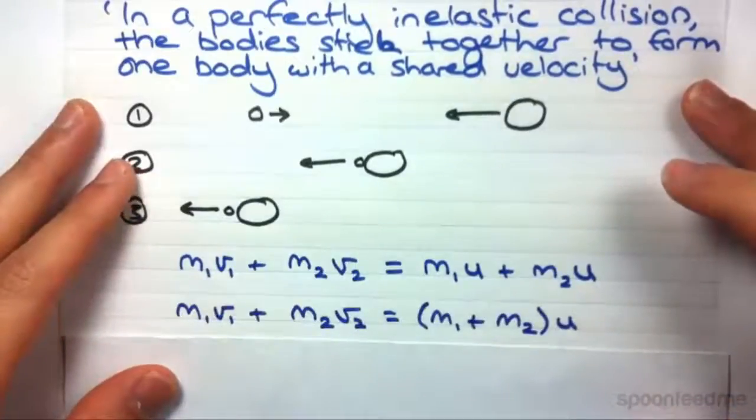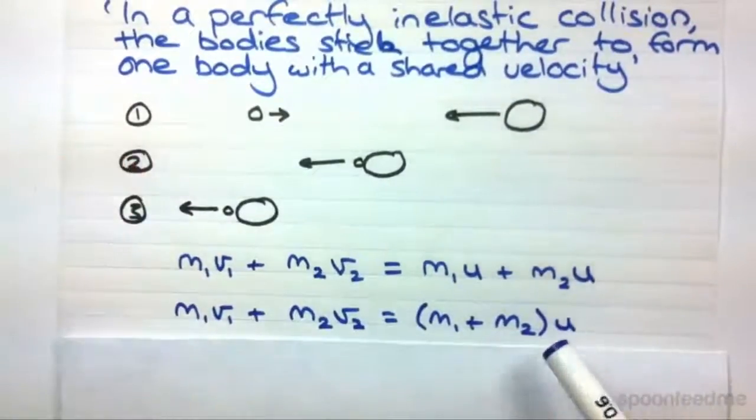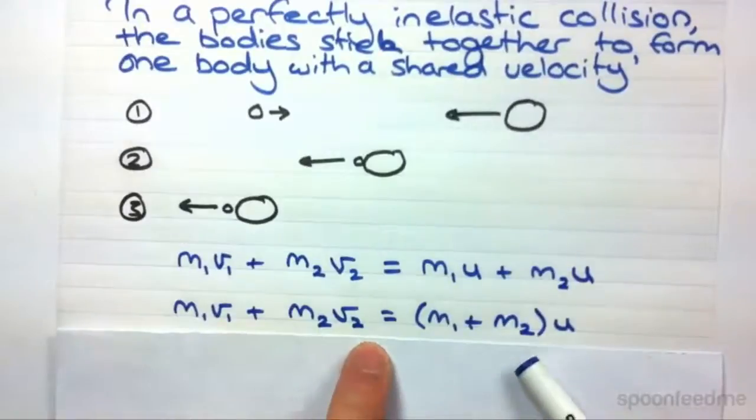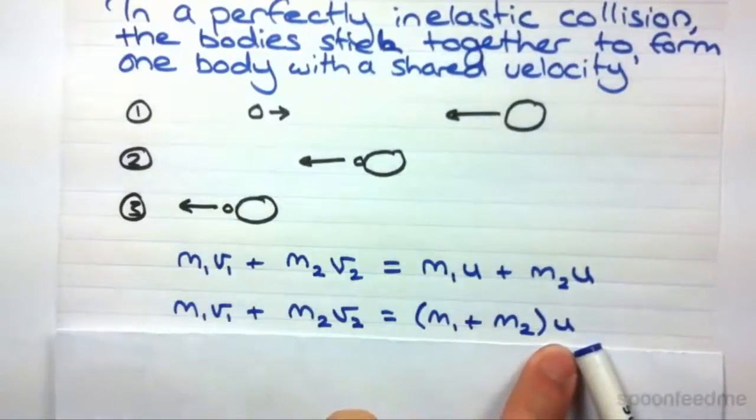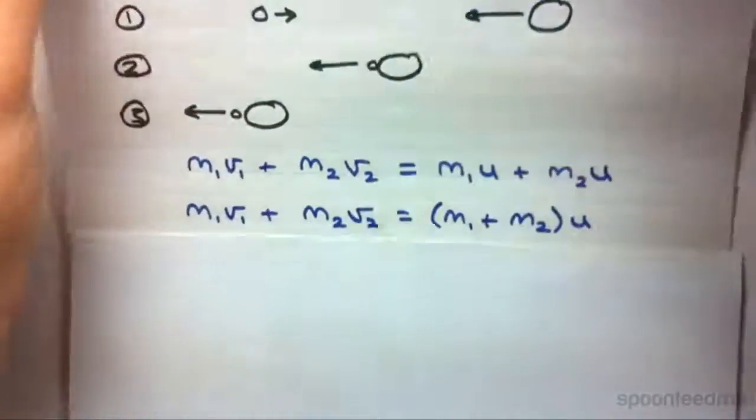So we can actually take out the common factor of U and end up with this formula: M1V1 plus M2V2 equals the combined mass of that one body times the shared velocity. So let's look at how we can use this in a question.